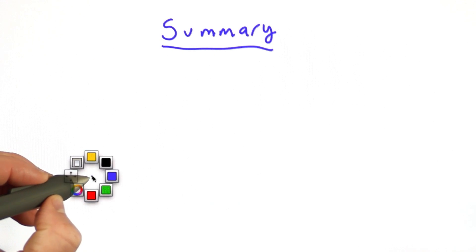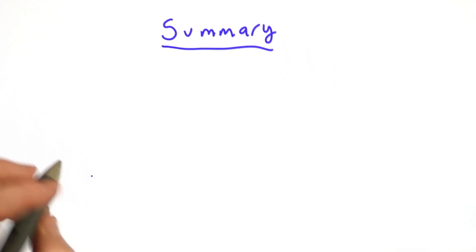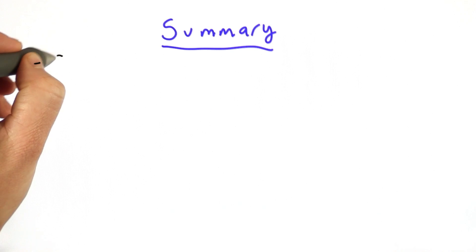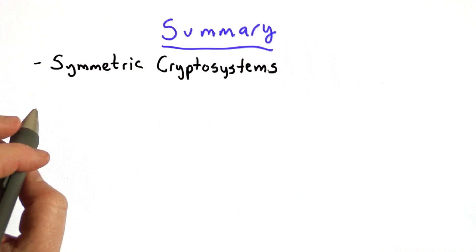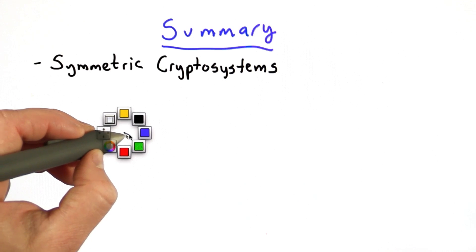We've reached the end of Unit 1. Let me remind you what we've covered. We covered symmetric cryptosystems and introduced the terminology and definitions we need to talk about encryption.